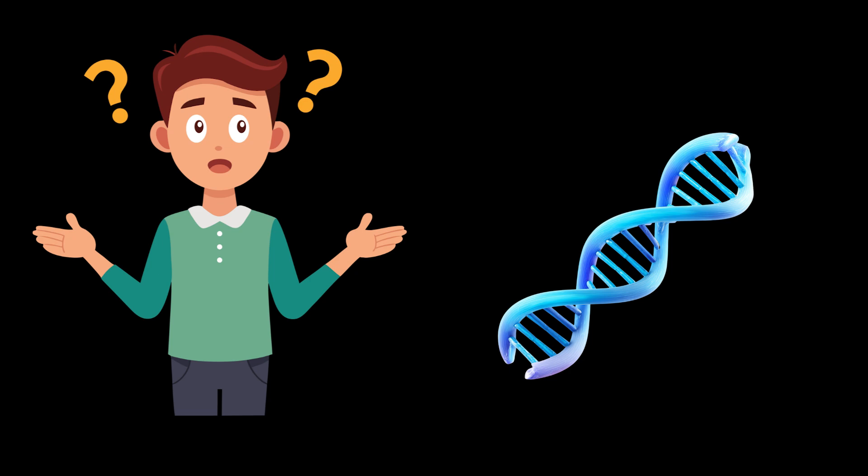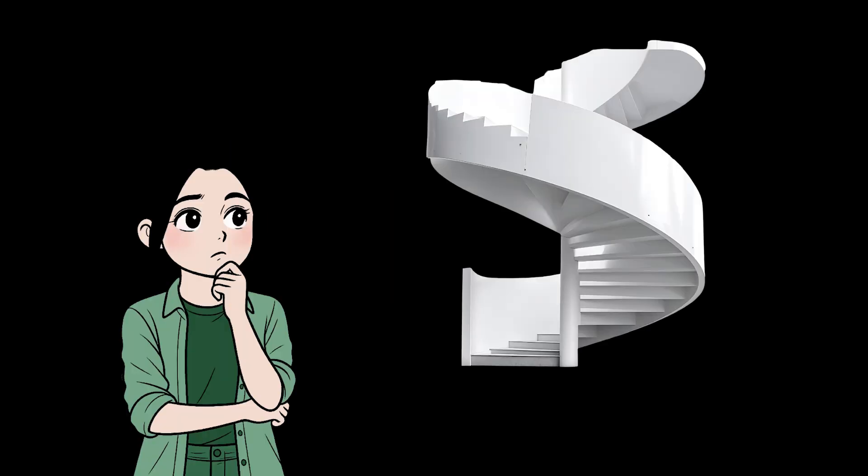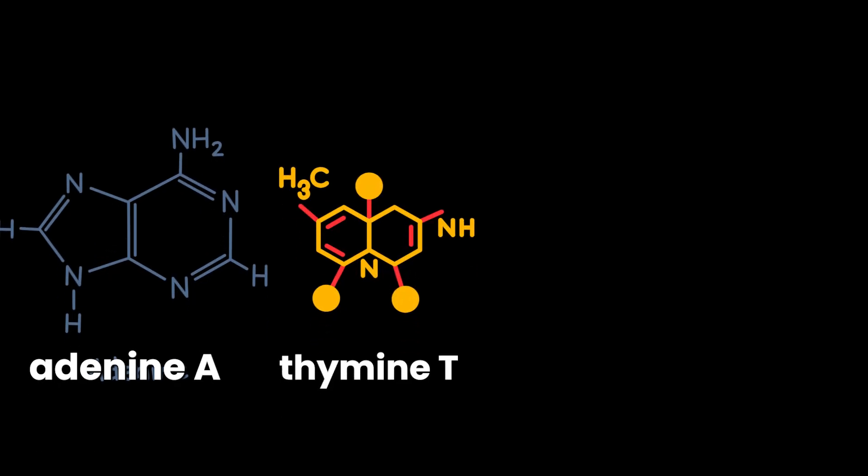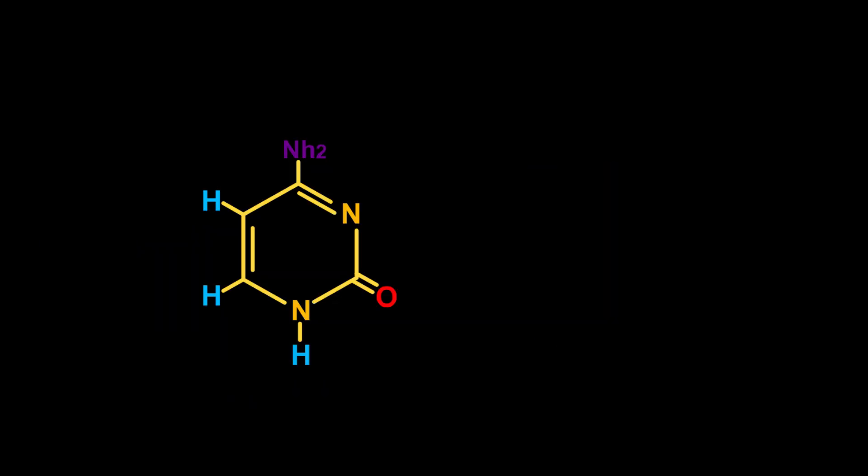DNA, or deoxyribonucleic acid, is a long molecule shaped like a double helix. Think of it as a spiral staircase with four types of steps. The nitrogen bases: adenine A, thymine T, cytosine C, guanine G. They pair like this, A with T and C with G.